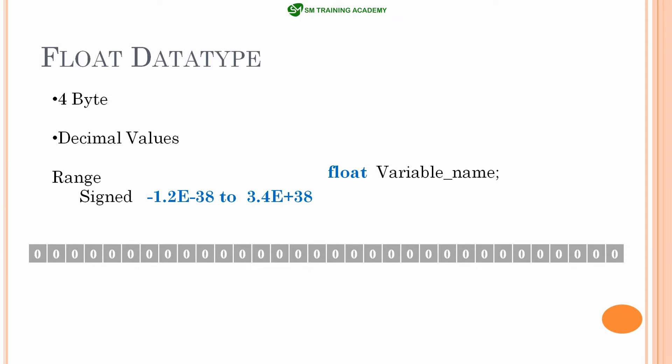You cannot directly convert this kind of number into binary format for storage because it would be a very tedious process and difficult to store within 32 bits. So to make the process simpler, the floating point number is split into two different parts: mantissa and exponent. The floating point number is expressed as plus or minus mantissa into 2 to the power exponent, and each part is stored in a separate part of memory.